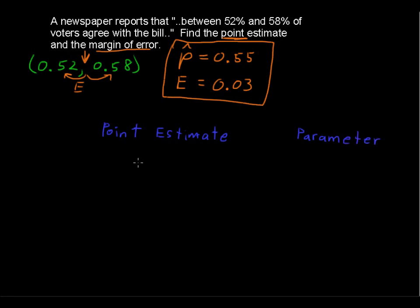So our point estimate for this example, it was p-hat. So that is when you're trying to get some information or get your best guess on what is the population proportion. Right, parameter is telling something about the population.